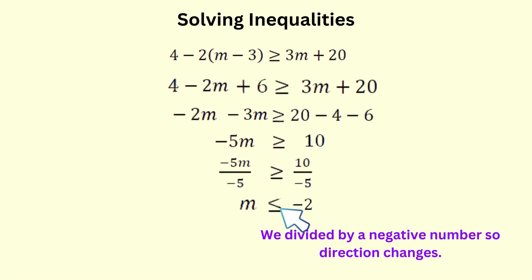To represent the solution on a number line, we shade our circle at negative 2 to indicate that negative 2 is a part of the solution set, since the or equal to is there. The arrow will go to the left, since it's less than.